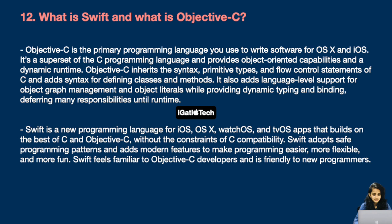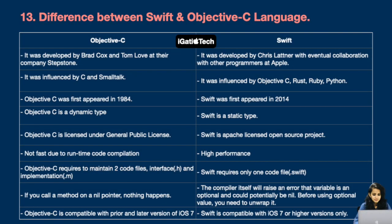Swift is a new programming language for iOS, OS X, watchOS, and tvOS apps that builds on the best of C and Objective-C without the constraints of C compatibility. Swift adopts safe programming patterns and adds modern features to make programming easier, more flexible, and more fun. Swift feels familiar to Objective-C developers and is friendly to new programmers.